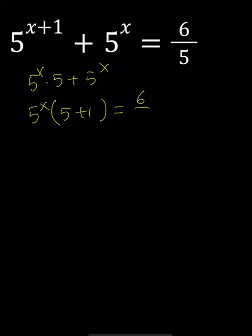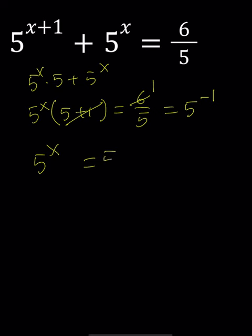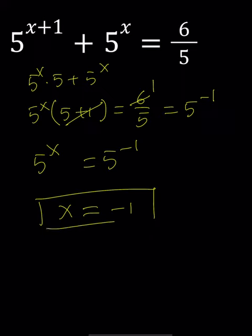We can go ahead and cross-cancel the 6 and end up with 1 over 5, which is 5 to the power negative 1. So we have 5 to the power x equals 5 to the power negative 1, which implies x equals negative 1 as the only solution.